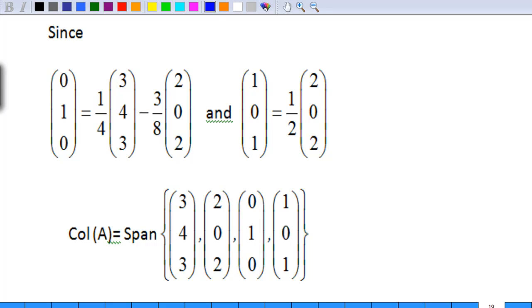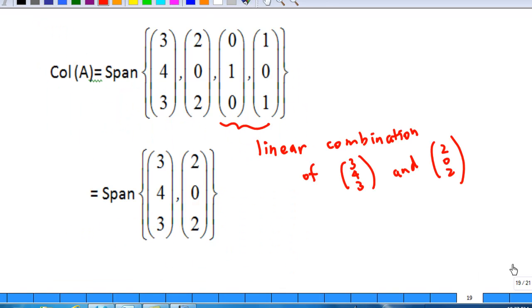Since column 3, 0 1 0 of A is equal to the linear combination of column 1 and column 2, and column 4 is also half of column 2, therefore, the column space of A is equal to the span of just 3 4 3 and 2 0 2. These two vectors will form a basis for the column space of A.